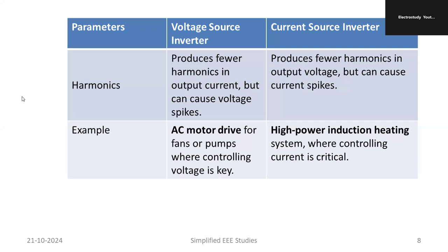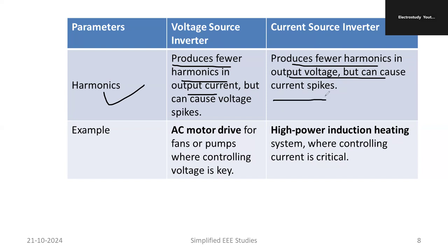Regarding switching speed, the CSI has an advantage. Regarding harmonics, compared to the current source inverter, the voltage source inverter produces fewer harmonics — only higher-order harmonics are present. In the case of the current source inverter, especially third and fifth harmonics are always present, which results in current spikes at the output.